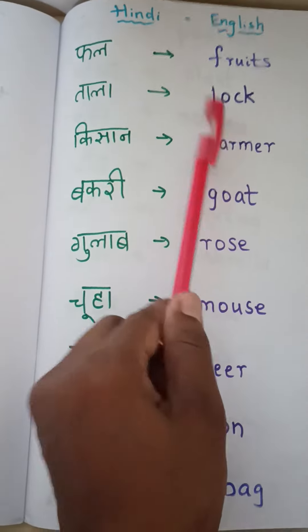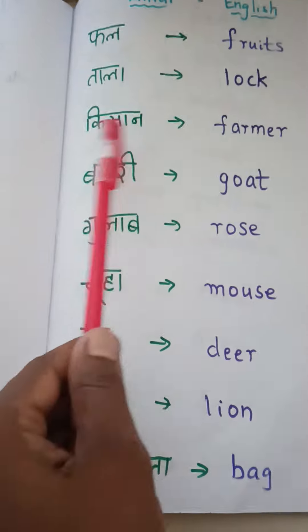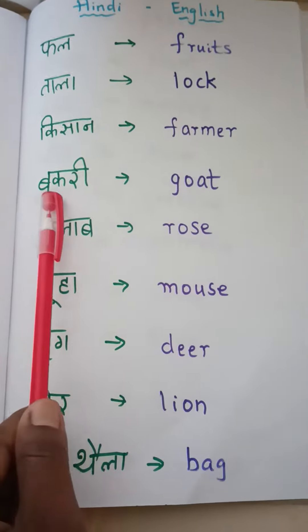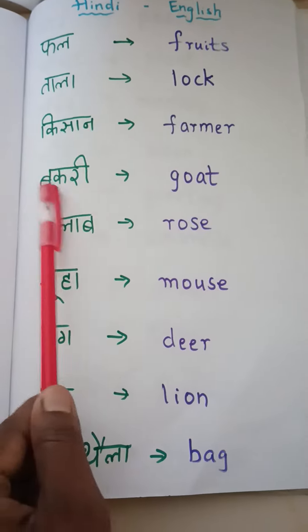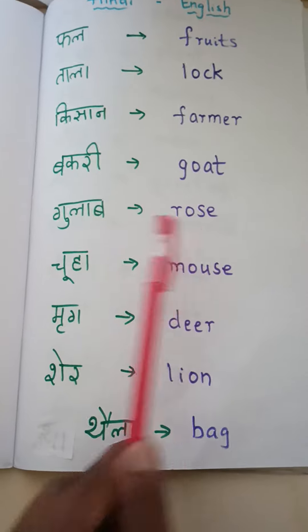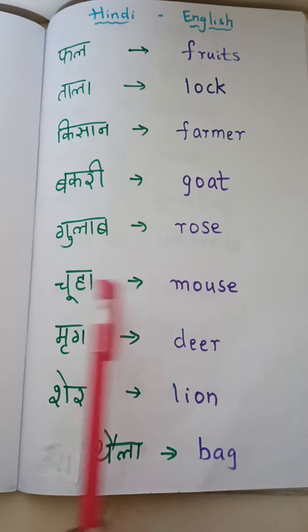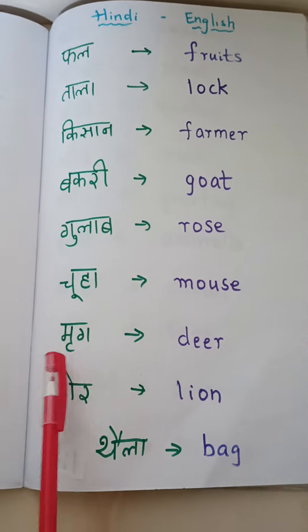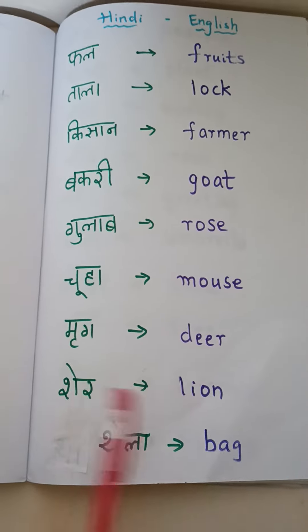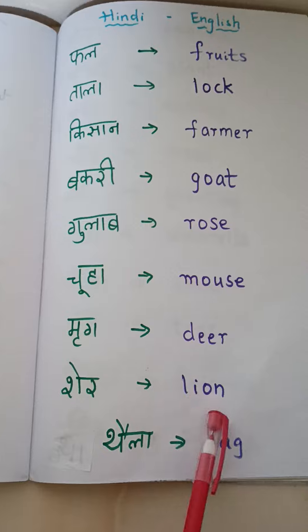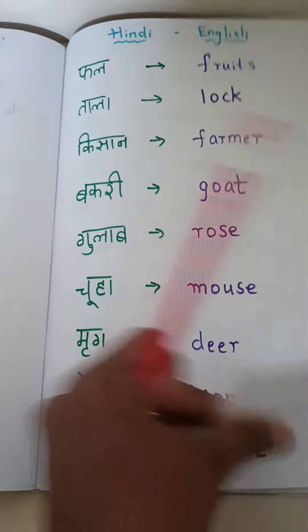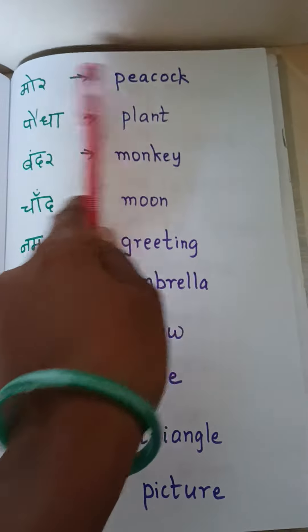Tala — lock. Kisaan — farmer. Bakri — goat. Gulab — rose. Chooha — mouse. Murug — deer. Shared — lion. Tala — bag. Moor — peacock.